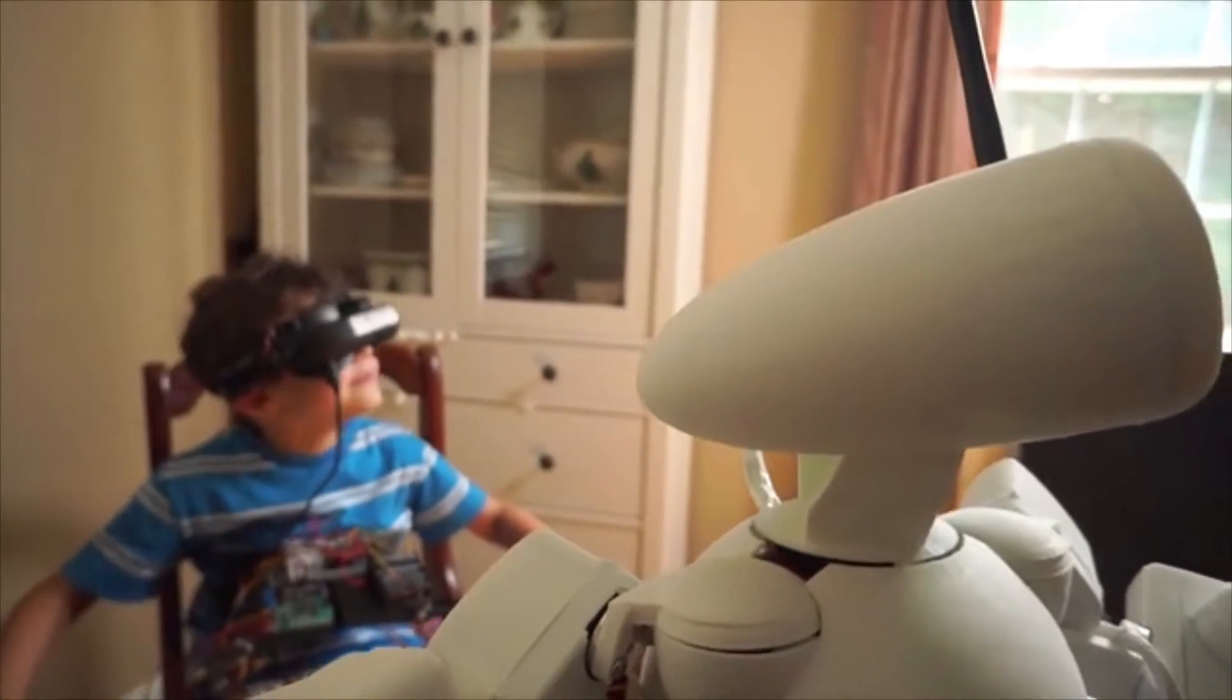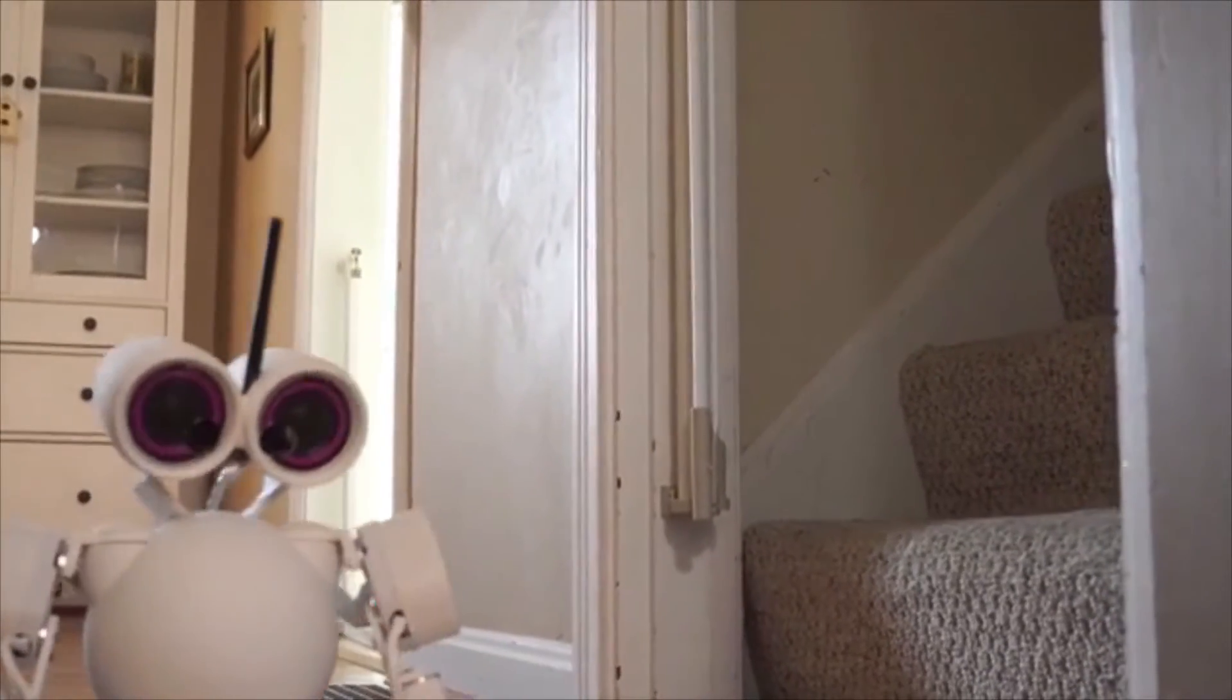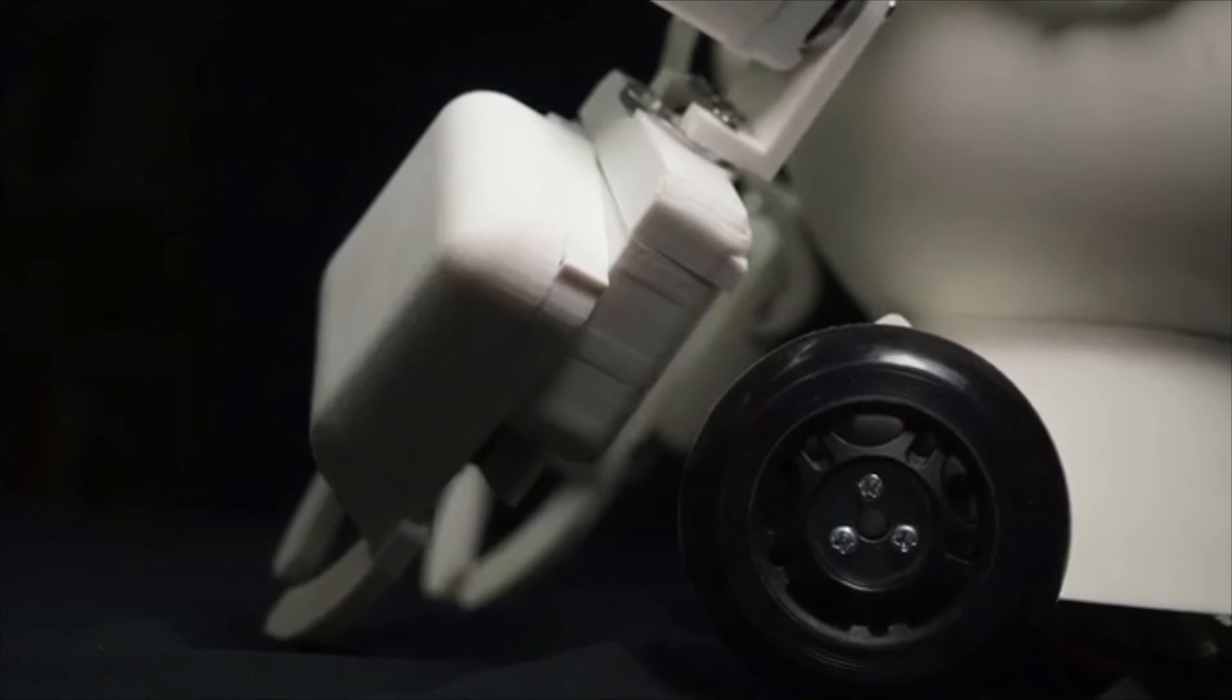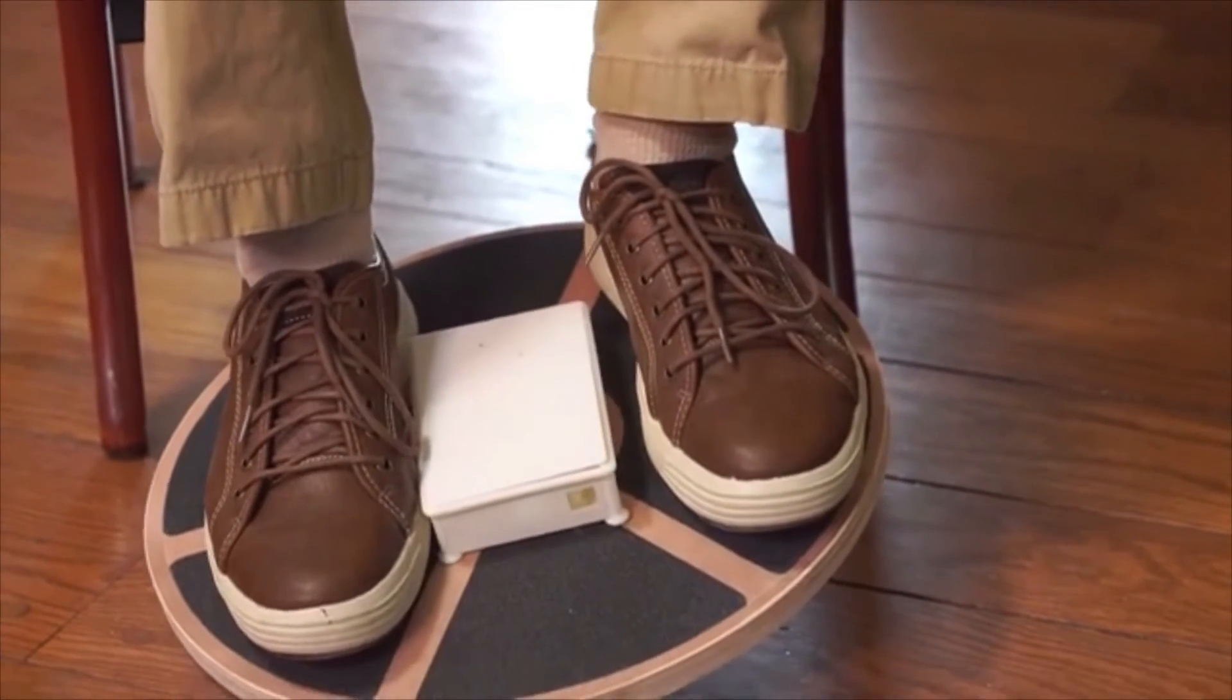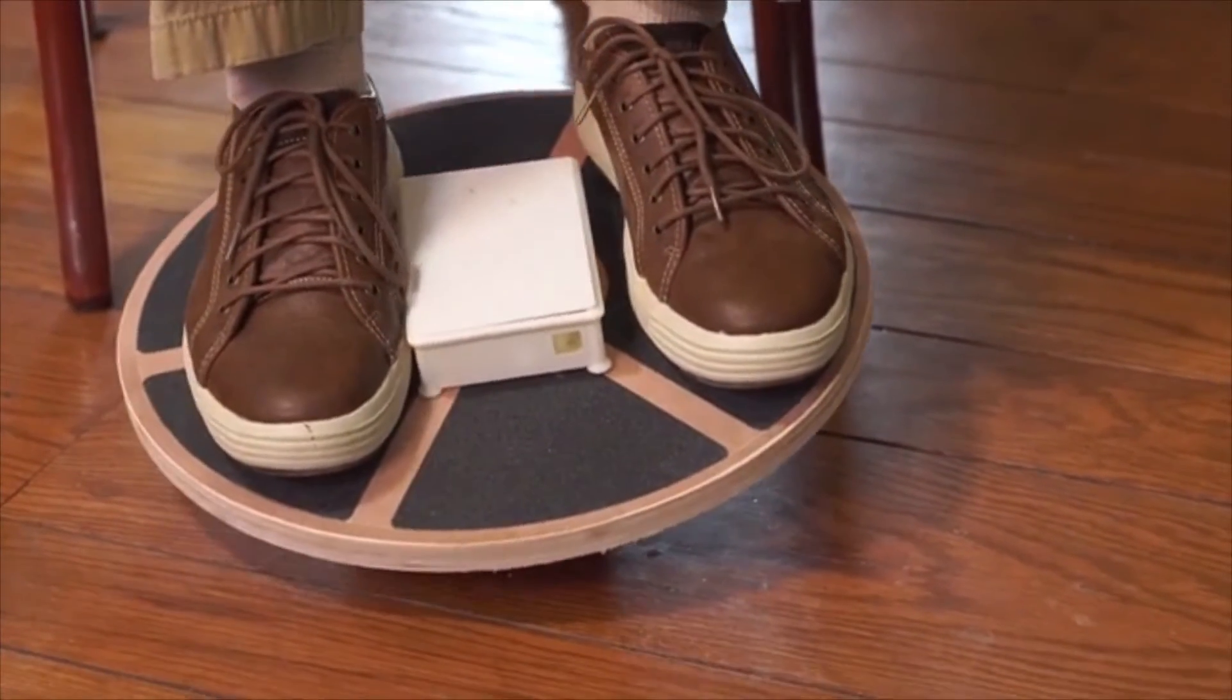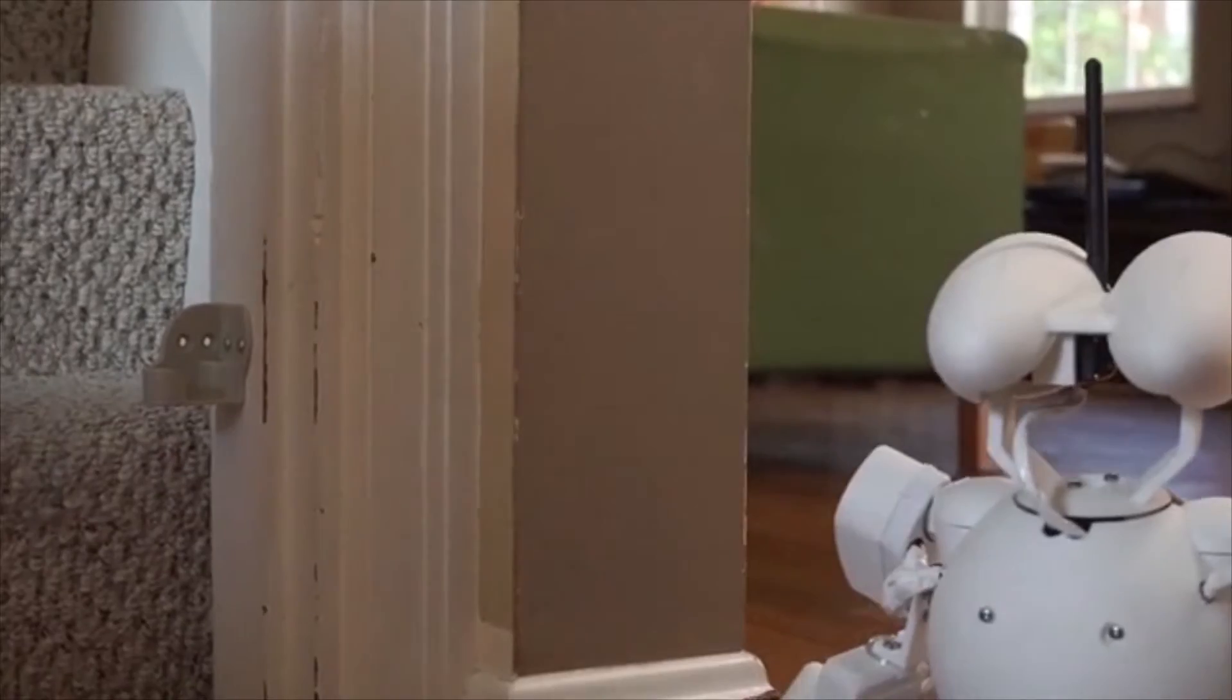As you move your head, you can see exactly what Mimic is seeing. It's absolutely seamless and completely immersive. Now to complete the experience, we wanted to make Mimic mobile, so we gave him wheels. And all the user does is place their feet on the foot controller and tilt their feet forward to move Mimic forward, tilt their feet back to move Mimic backwards, left and right, and Mimic will go in the direction that the foot controller is tilted.